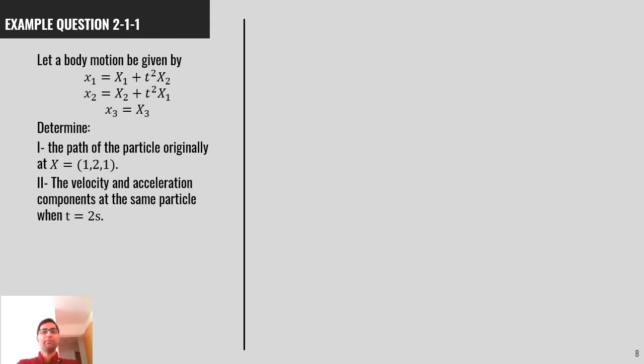Here's an example for you. It says, let the body motion be given by this mapping function. x1 is capital X1 plus t squared capital X2. x2 is capital X2 plus t squared capital X1 and x3 remains unchanged, equal to capital X3.